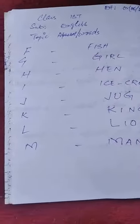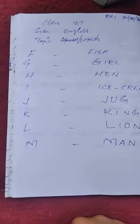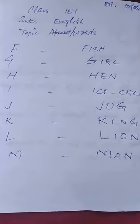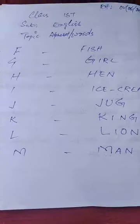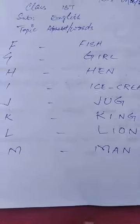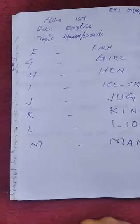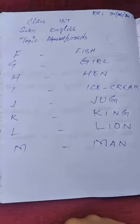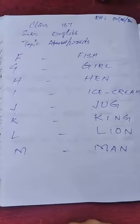The other part of this time is in front of F. F for Fish. F I S H, Fish. The other part is G.